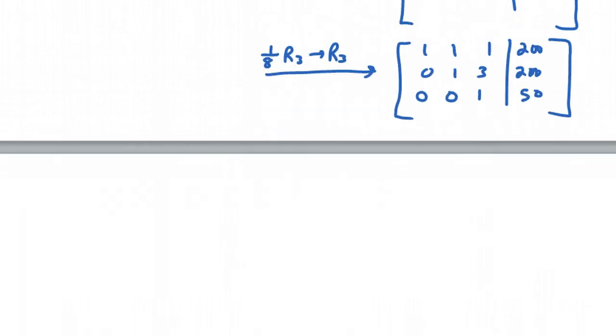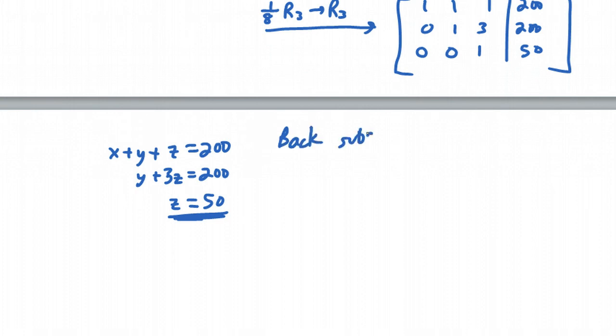Now what we have is a row echelon matrix. And we can write the corresponding system as x plus y plus z equals 200, y plus 3z equals 200, and z equals 50. We already know then that z is 50. What's y? We're going to do back substitution. We have y plus 3z, but z is 50, is equal to 200. That's y plus 150 is equal to 200. And so what that gives you is that y is also 50.